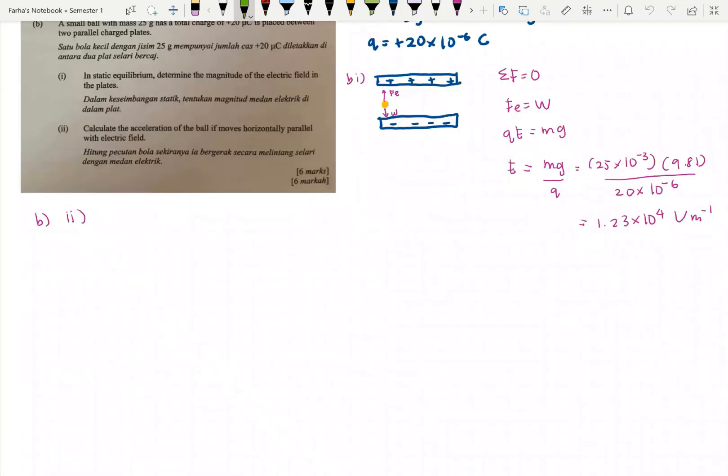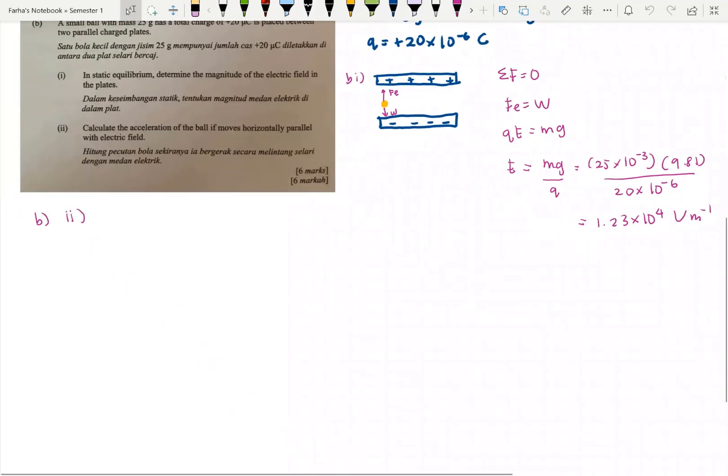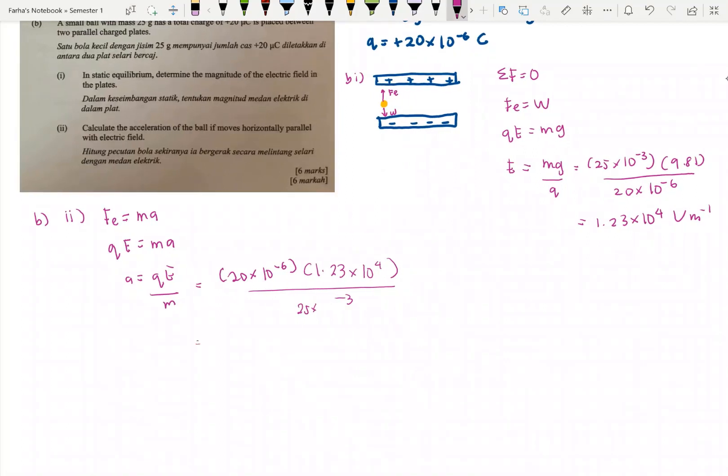For B2, calculate the acceleration of the ball if moved horizontally parallel with the electric field. The electric field is from positive to negative. Let's say acceleration A is parallel with the electric field. Therefore FE = ma. QE = ma. Therefore acceleration A = QE/m. Q is 20×10^-6, E is 1.23×10^4 from the previous question, mass is 25×10^-3. We get 9.84 m/s².